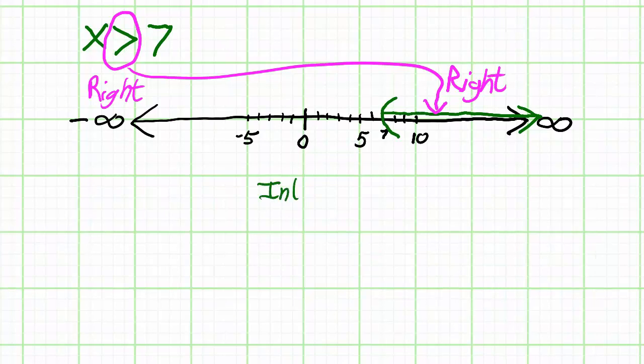The interval notation will look pretty much like the graph. Parenthesis, 7, comma, infinity, parenthesis closed. There you have it, thank you.